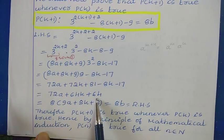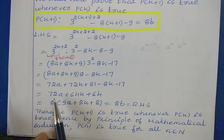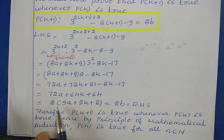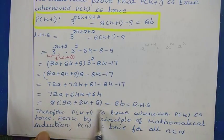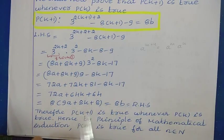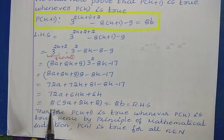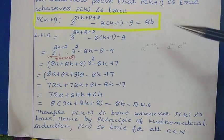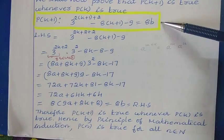Now we can take 8 out as a factor. 72 is 8 into 9, and 64 is 8 into 8. Taking 8 out gives 8 times (9a plus 8k plus 8). This entire bracketed value is some multiple — we call it b — so the result is 8b.